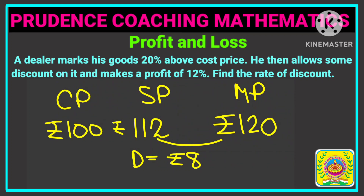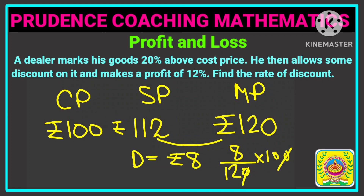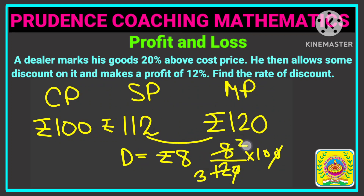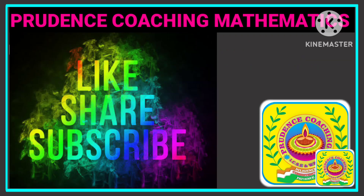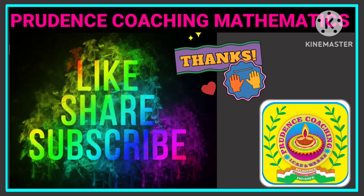Discount is 8 divided by MP, that is 120, multiplied by 100. Cancelling zeros, 4 threes are 12 and 4 twos are 8, so we get 20 by 3, which equals 6 and 2/3 percent. This is our final answer.